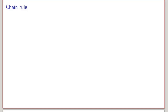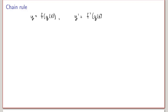Let me start by recalling the chain rule for functions of a single variable. The chain rule is useful to calculate the derivative of composite functions, which are functions of functions. In this case, the chain rule says that the derivative of y is equal to the derivative of the outer function evaluated at the inner function, times the derivative of the inner function.